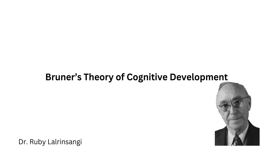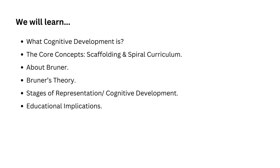Today we will build on that foundation as we explore Jerome Bruner's contribution to understanding how we learn. We will understand the core concepts of Bruner's theory — scaffolding and spiral curriculum — which are pivotal and very important for educators to understand. We will discuss who Bruner was and why his theory was so influential in education. We will also understand his theory and the stages he proposed: enactive, iconic, and symbolic, and how these concepts are applied in real-world educational settings.